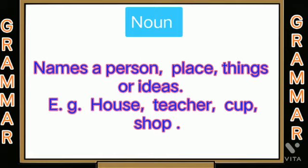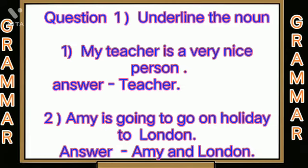Noun names a person, place, thing, or idea. Examples: house, teacher, cup, shop. Question one: underline the noun. First — 'My teacher is a very nice person.' Answer: teacher. Second — 'Amy is going to go on holiday to London.' Answer: Amy and London.